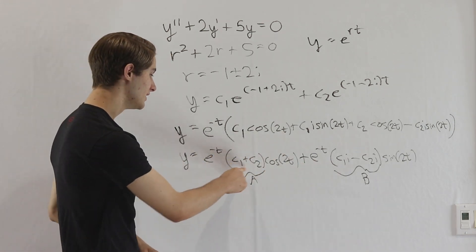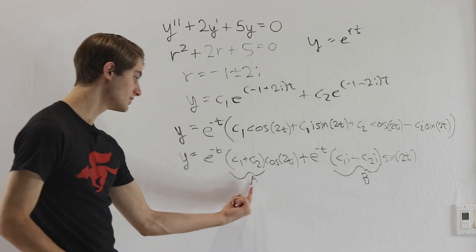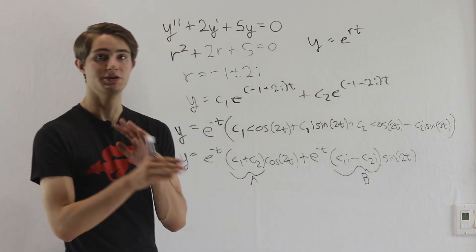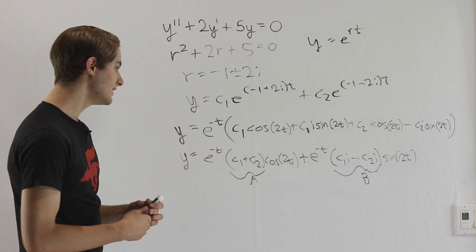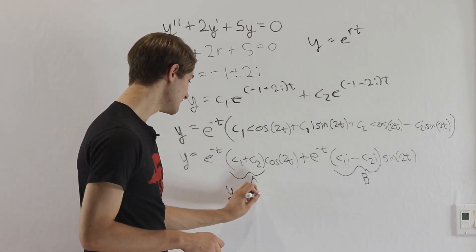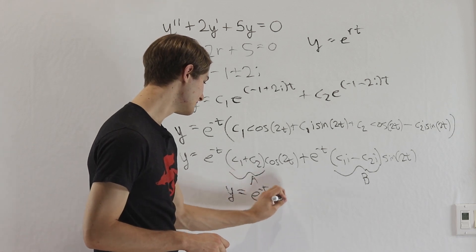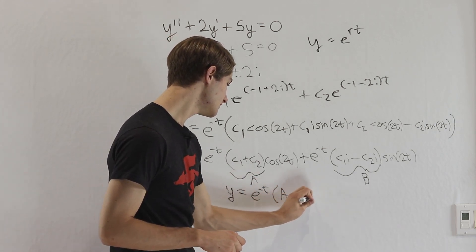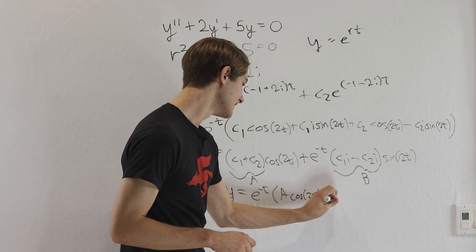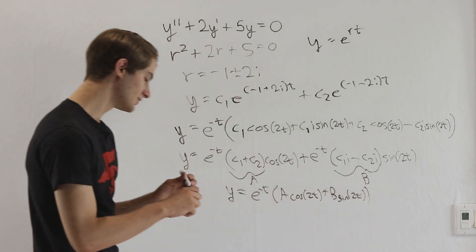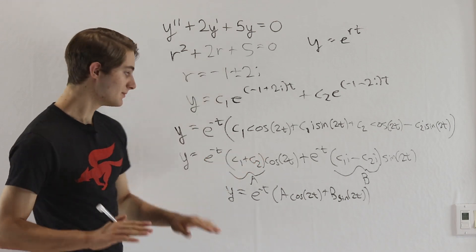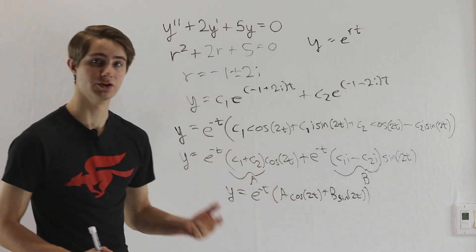We'll always be able to find a c1 and c2 such that we get a and b to be whatever numbers we want to be, which means we can actually rewrite this equation as y equals e to the negative t times a cosine 2t plus b sine of 2t. And now we notice that we've taken out all the imaginary numbers, and we're just left with a real solution.